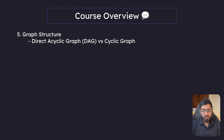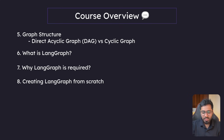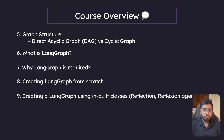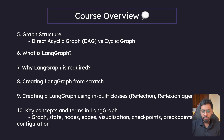We will also understand the graph data structure and the differences between DAGs and cyclical graphs. Now that we've understood the prerequisites, we will move on to: what is LangGraph, why is it required, and what are the limitations of LangChain? With LangGraph, we will be building different agentic architecture patterns like the reflection agent, reflexion agent, and multi-agent workflows. We will understand all the key terminologies — like what is a graph, what is a state, what is a node, what is visualization, what are breakpoints, and so on.